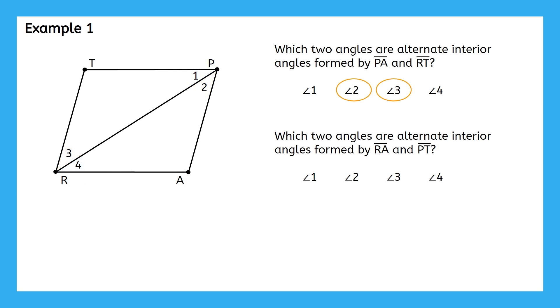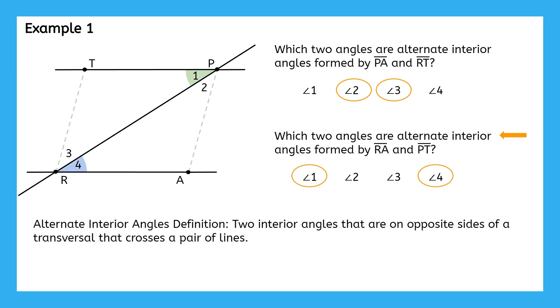Now let's look at our other segments. Which two angles are the alternate interior angles formed by RA and PT? Take a look at this adjusted diagram to help give you a better picture. Angles 1 and 4 are alternate interior angles formed by RA and PT.